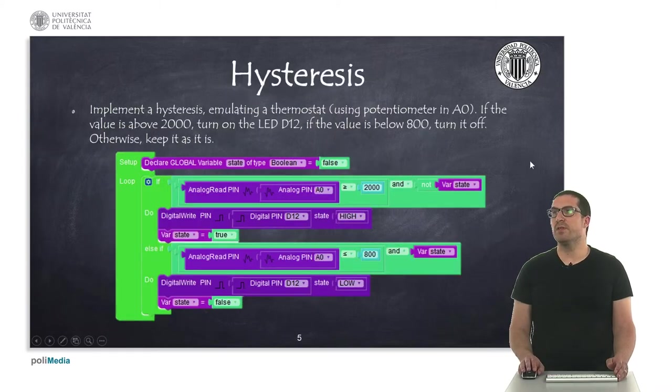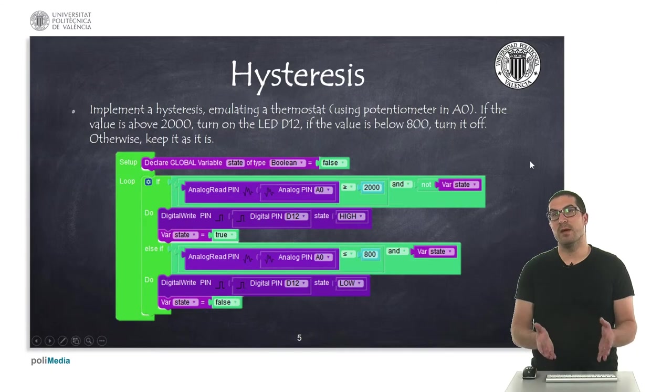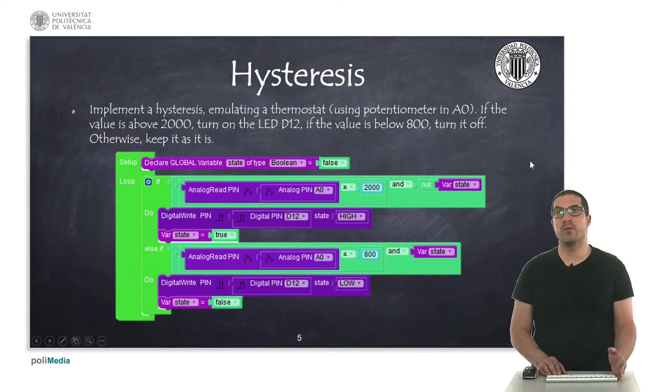So, in this first example, I will emulate a hysteresis property that we can use, for instance, to regulate the temperature of our room. So, as you know, whenever we want to turn on or off, let's say, a heater, we can use a potentiometer to set the level of temperature that we want.